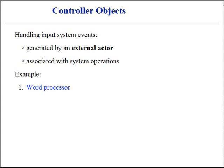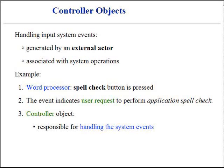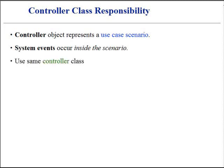In a related example, consider a user of a word processor. When the Spell Check button is pressed, the system event is generated. The event indicates a user request to perform application spell check. Controller is a non-user interface object responsible for receiving or handling the system event. Controllers define the methods for the system operation. A controller object represents a use case scenario inside of which the system event occurs. It is best to use the same controller class for all system events in the same use case scenario.